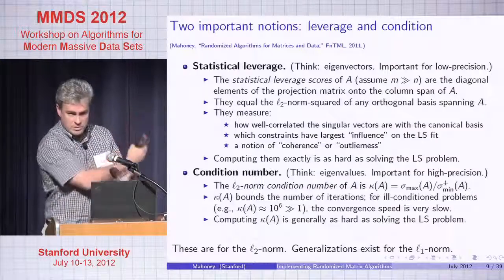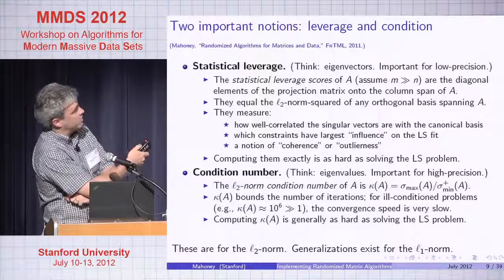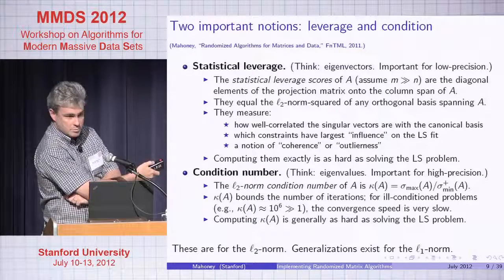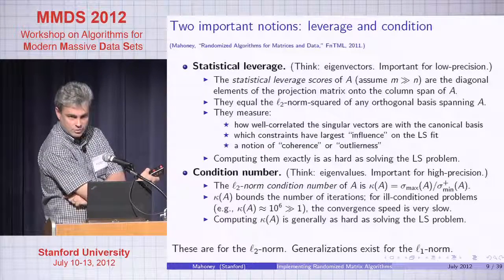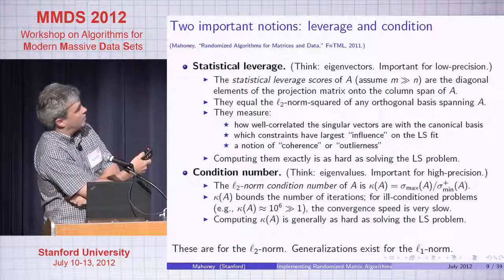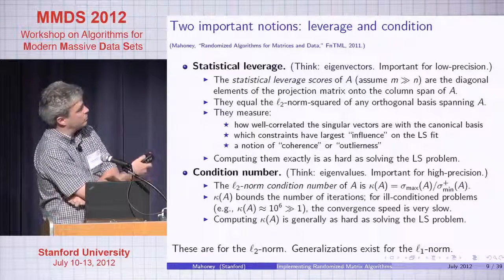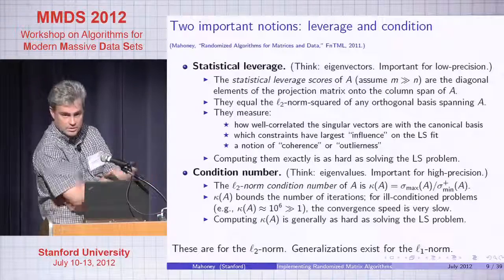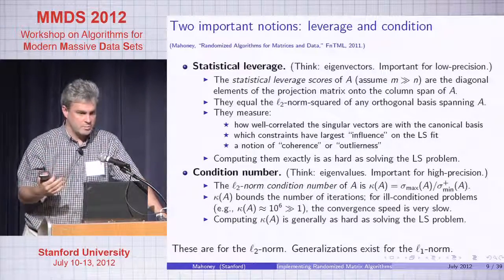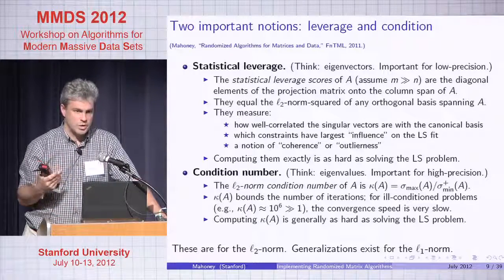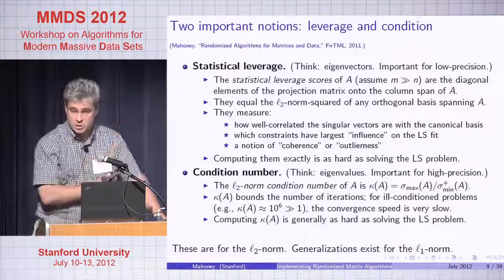The statistical leverage scores of a tall matrix A are the diagonal elements of the projection matrix onto the column span — equivalently UU-transpose where U is the left singular vectors. They measure how well correlated the singular vectors are with the canonical basis, indicating which constraints have the largest influence on the least-squares fit. Coherence is effectively the largest leverage score. Computing them is exactly as hard as solving the least-squares problem, though you can compute them in O(n·d·log d) time.